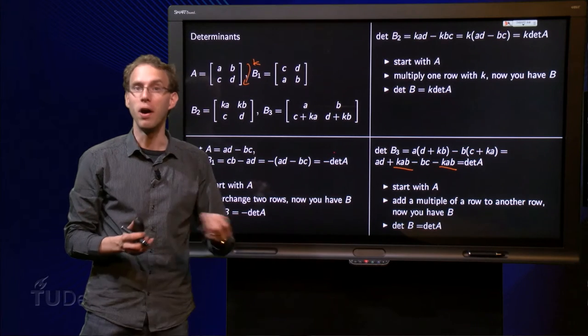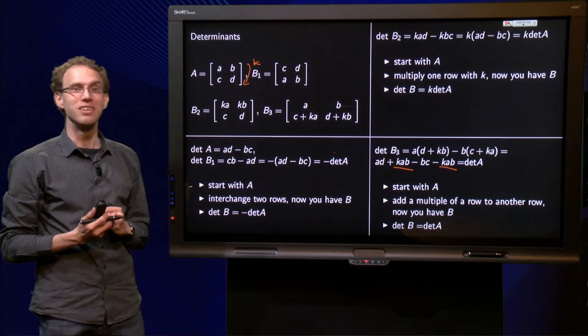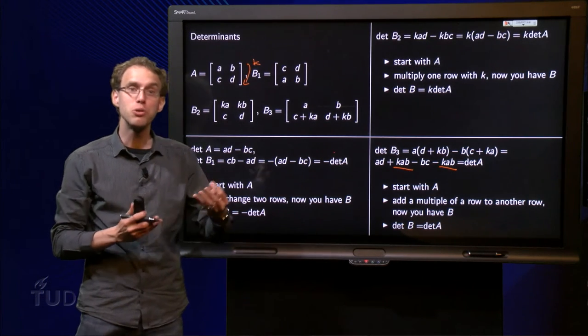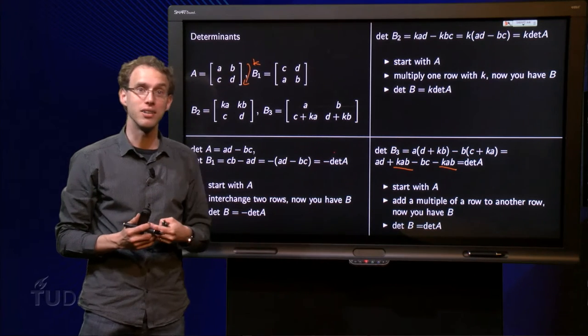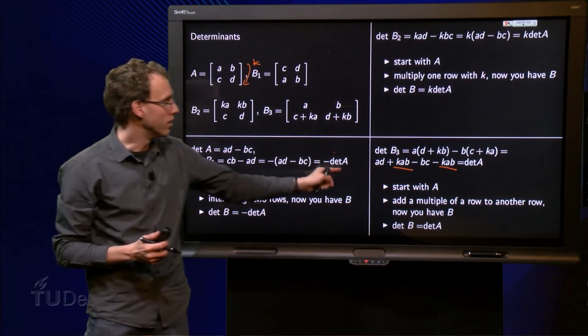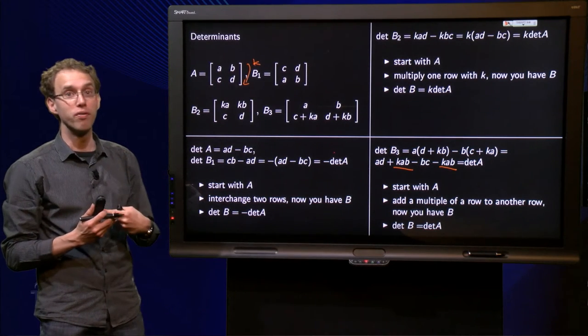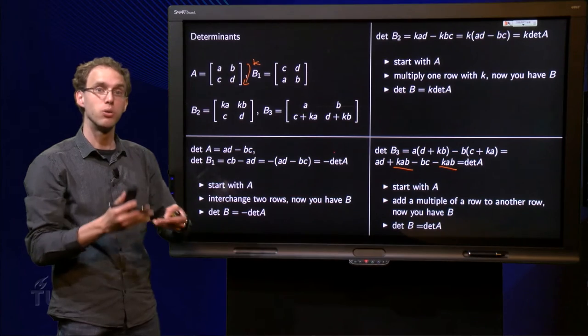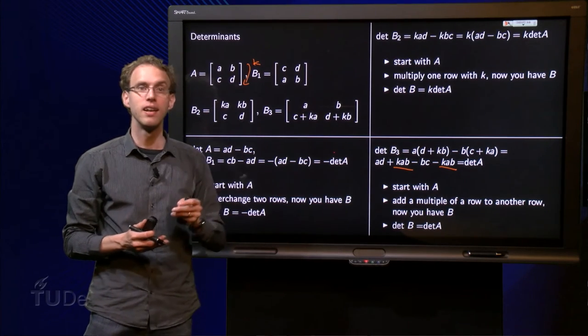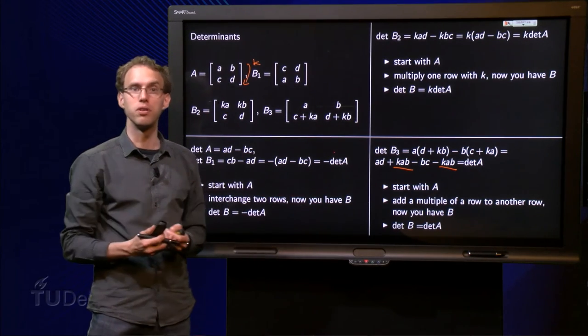So what has happened? Well, nothing. Well, that's nice, our most used operation does not alter the determinant. So we start with A, we add a multiple of one of the rows of A to another row, and we get B, then the determinant of B is just the determinant of A.